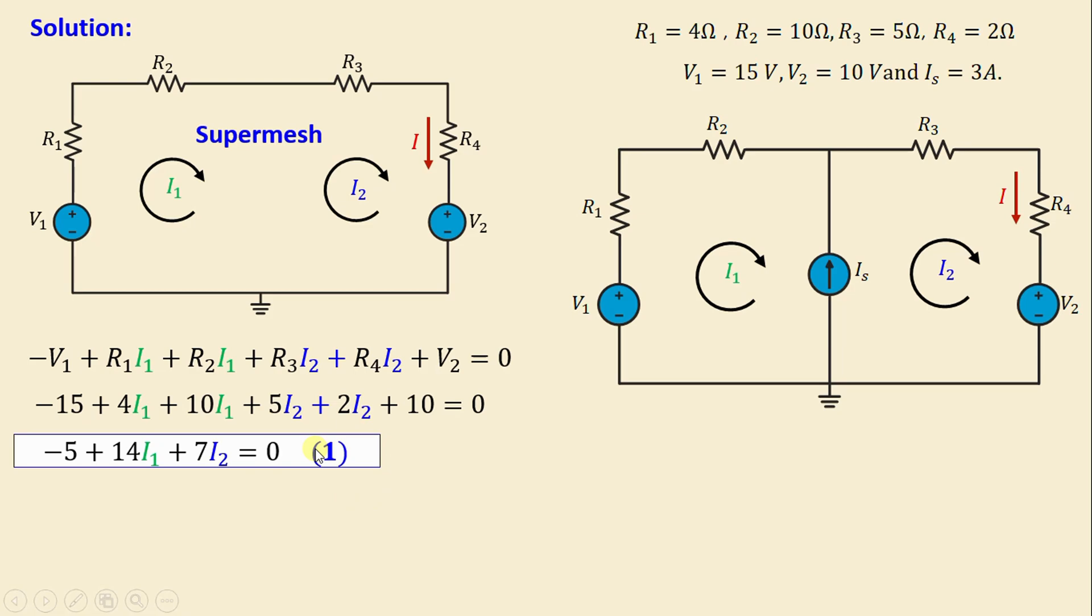Until now we have one equation and two unknowns. In order to get the second equation, focus on the current source Is. We can write Is equals I2 minus I1. That means I2 minus I1 equals 3 amps, and I will call this equation 2.